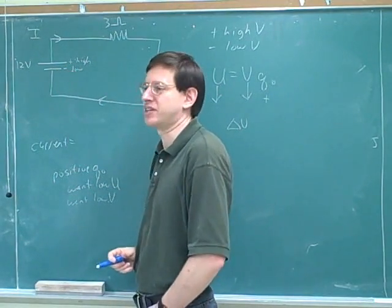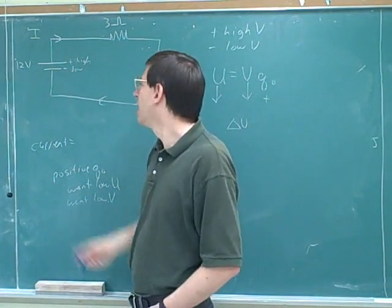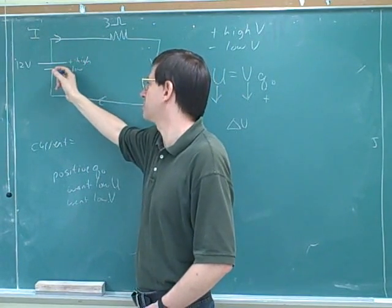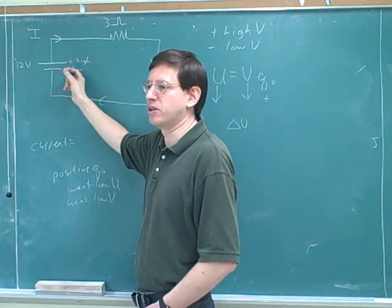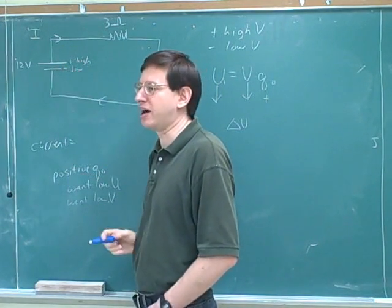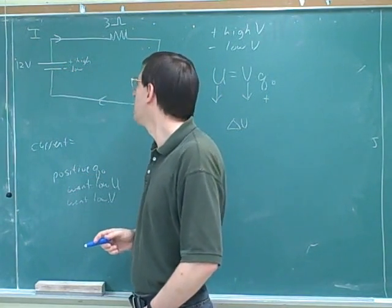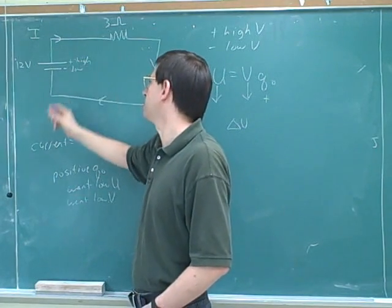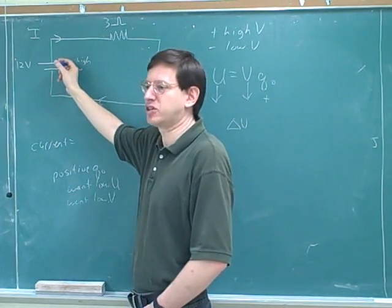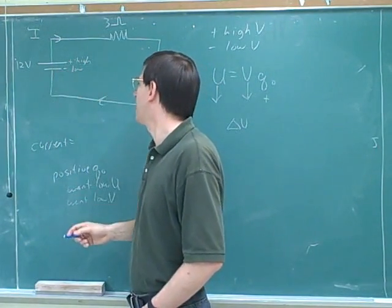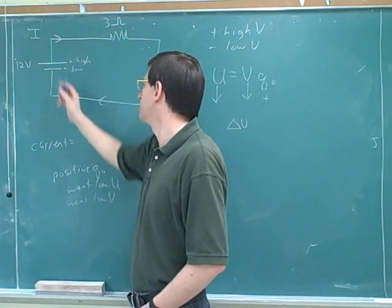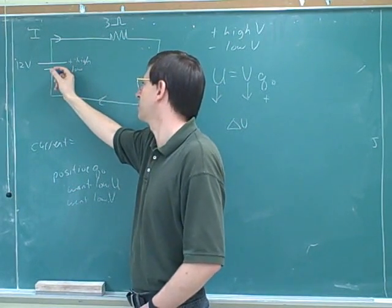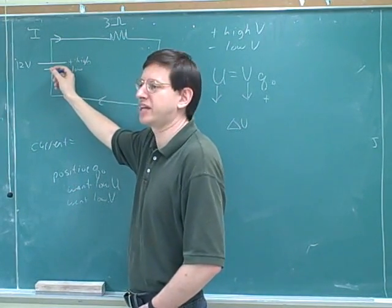That just helps us as a mnemonic. That's one reason why it's helpful to use a plus for a high potential and a negative for a low potential — because positive charges want to move away from a high potential, just like they would want to move away from a positive charge. And positive charges want to move towards a low potential, just like they would want to move towards a negative charge.